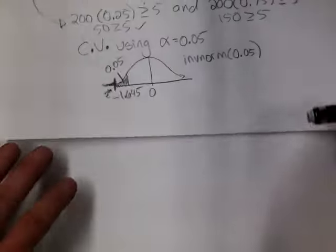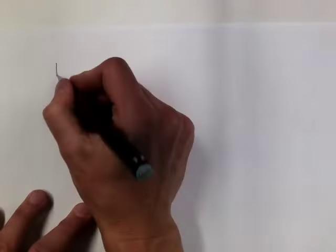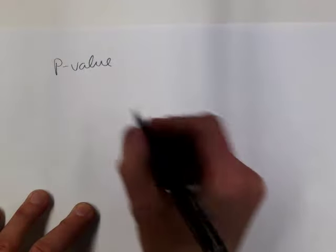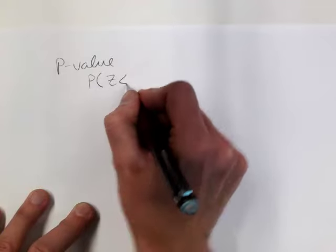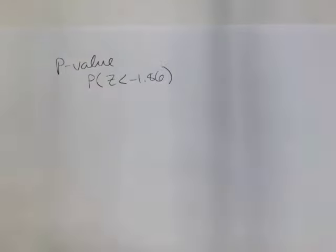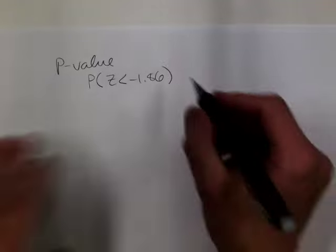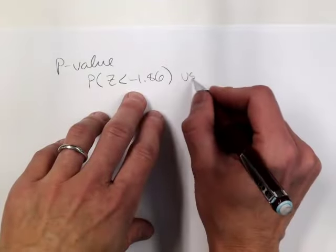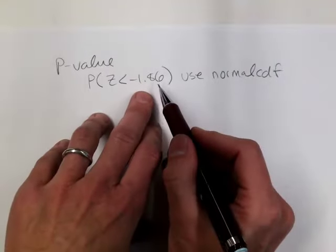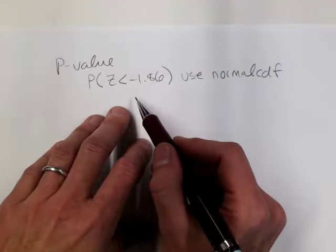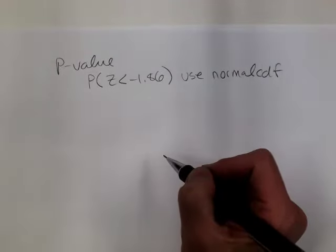Let's find the p-value. If I wanted to do this by hand, it would be the probability of getting a z-score less than negative 1.86. I do not have to double that because it's a one-tailed test. So if you wanted to do it by hand, you would use the normal CDF — you're given the z-score and want to find the corresponding area. Instead, I'll use the calculator.